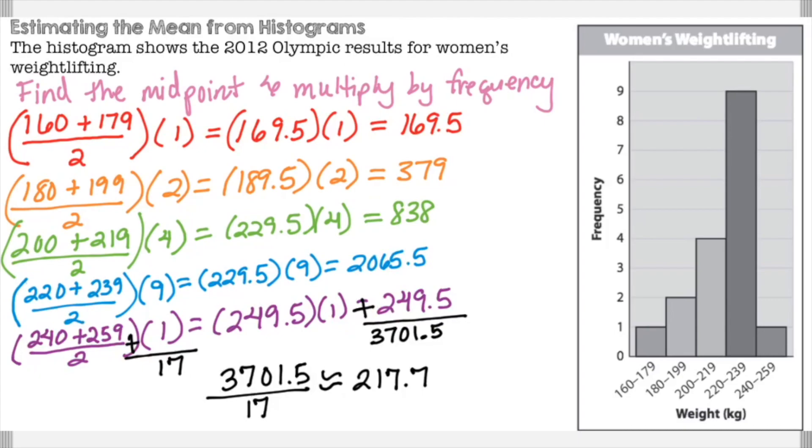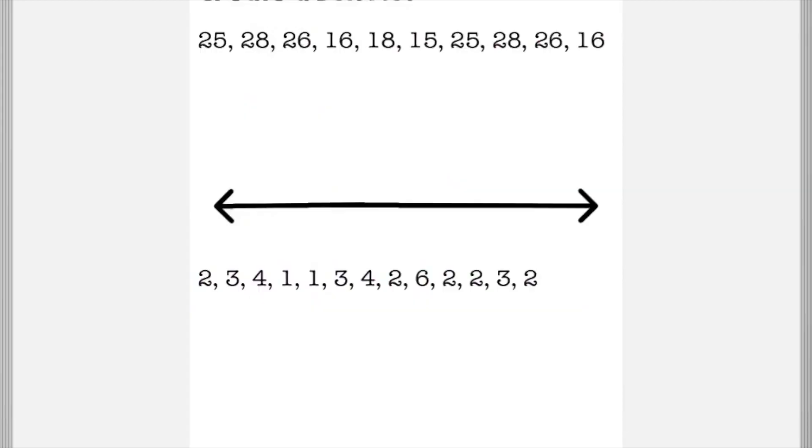This question is asking you to find the estimated mean, but you have to keep it in the context of the problem. This is talking about the Olympic results for weightlifting. That means the estimated mean is approximately 217.7 kilograms. And that would be the answer.